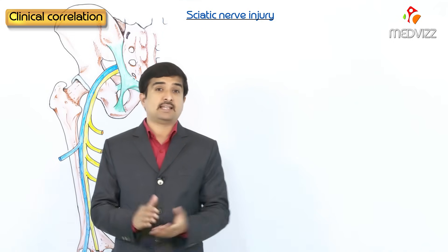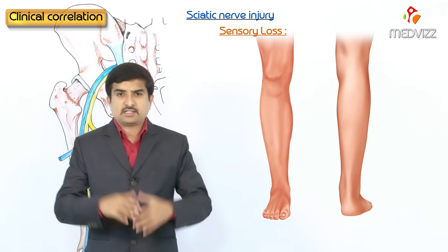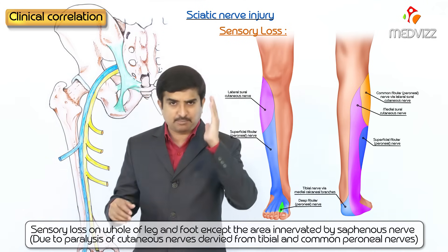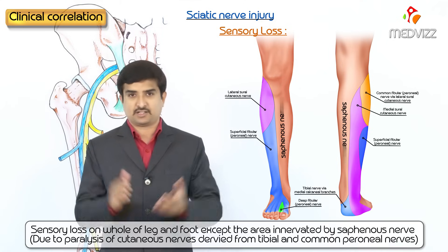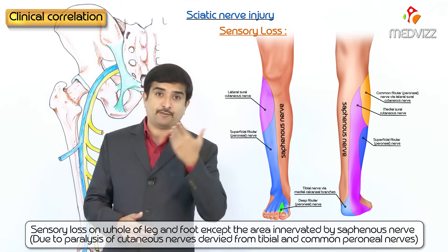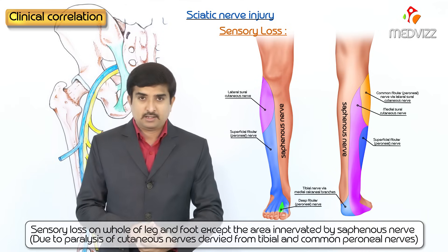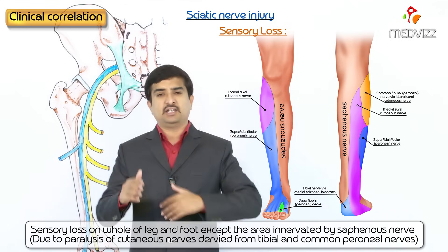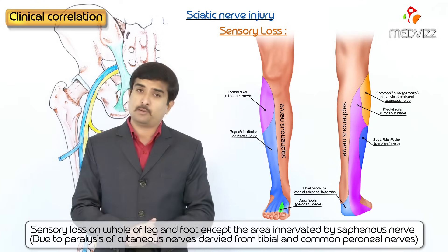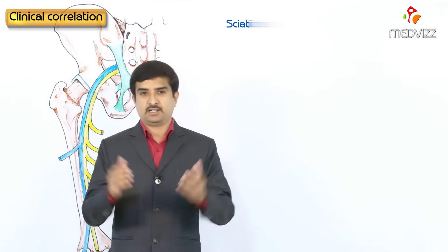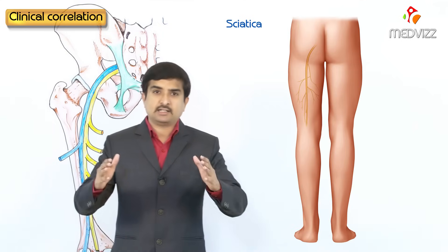Sensory loss is seen on the whole of the leg and foot, except for the area innervated by the saphenous nerve, because the saphenous nerve is a component of the femoral nerve and not the sciatic nerve. This sensory loss is mainly due to paralysis of the cutaneous nerves derived from the tibial and common peroneal nerves.